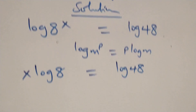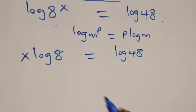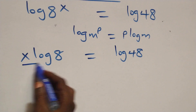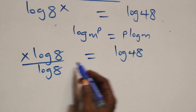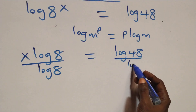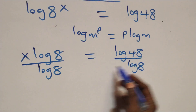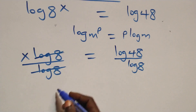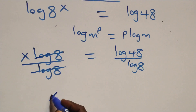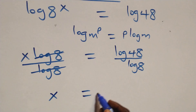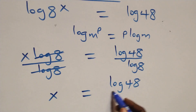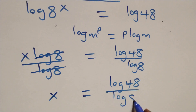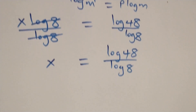Then, next step here, we divide both sides by log 8. That is, we divide this side by log 8 and also divide this side by log 8, which implies log 8 cancels each other here. And we have x equals to log 48 over log 8.